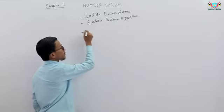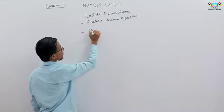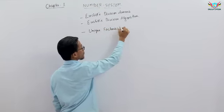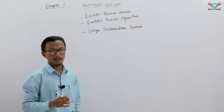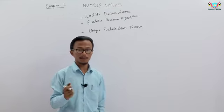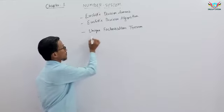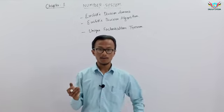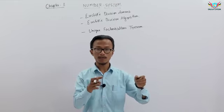After this, one of the important theorems is the Unique Factorization Theorem, also called the Fundamental Theorem of Arithmetic. This is an important theorem where we discuss that any number can be factorized uniquely.